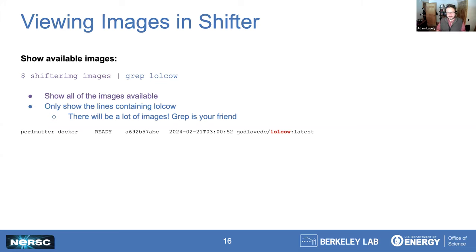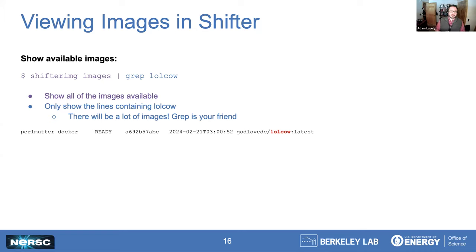Once you have this image, it's good to actually know that it's there. You can check using: shifter img images — ask for all of them. If you don't have the pipe and the grep lolcow, you'll see that there are hundreds if not thousands of images currently available, which shows how many people are using Shifter on Perlmutter. But if you grep, you can see exactly what you've pulled down. I do suggest making sure that the image came through and is the version that you want.